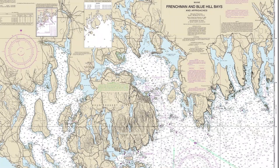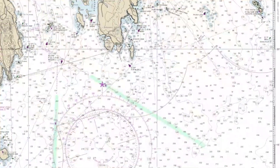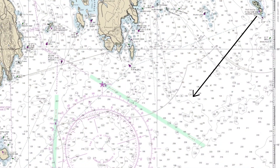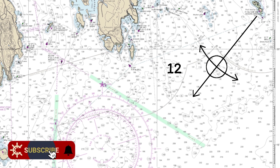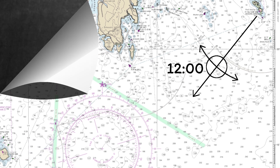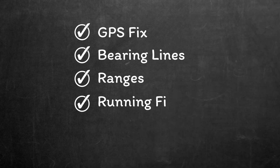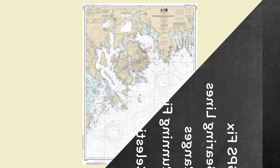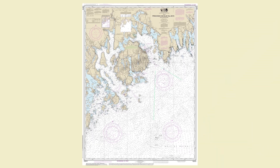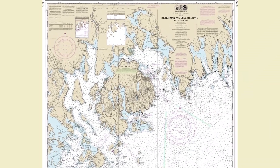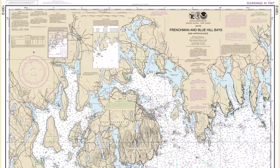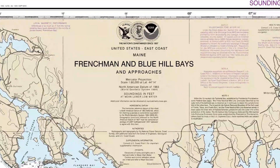It's all very well looking at a chart, but unless you can pinpoint your exact location on that chart, it really isn't doing you much good. How then can you transfer your actual position onto a chart? In this video I will show you five different techniques for fixing your position. We're going to be using NOAA chart 13312 for this demonstration, which covers Frenchman and Blue Hill Basin approaches in Maine on the east coast of the US.